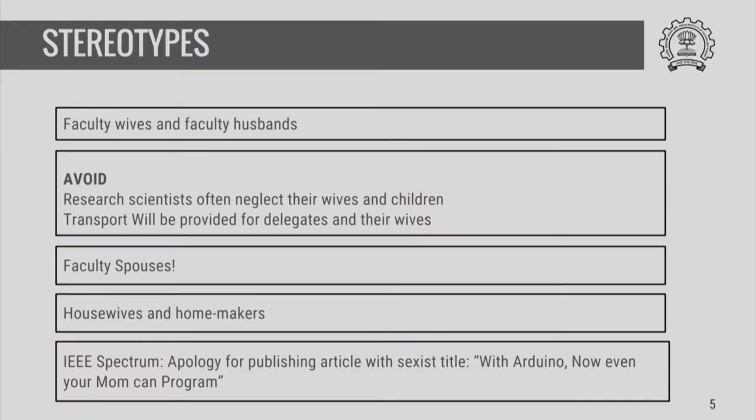Some more examples of stereotypes which have to be avoided: a term like faculty wife indicates that all faculty members are men, which is factually incorrect and also a stereotype. There are words available such as spouses, which are inclusive and which accept the fact that faculty members or people in any profession can be both men and women.